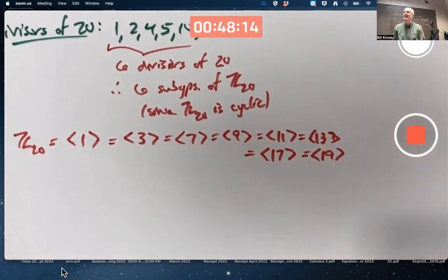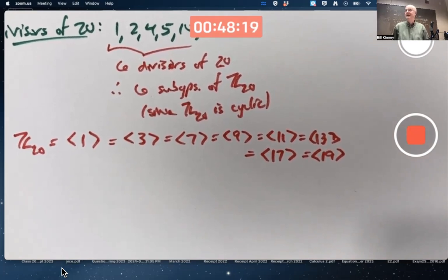Hey, guess what? Those numbers are also the elements of U20 as a multiplicative group under multiplication mod 20. Isn't that interesting? Is that a coincidence? No.